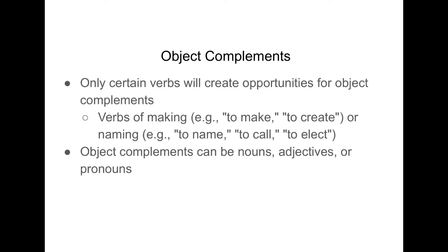We should note that only certain verbs will create opportunities for object complements, like verbs of making or naming, among others — with many verbs it's not possible to put an object complement after the direct object. Also remember that object complements can be nouns, adjectives, or pronouns, just like subject complements.